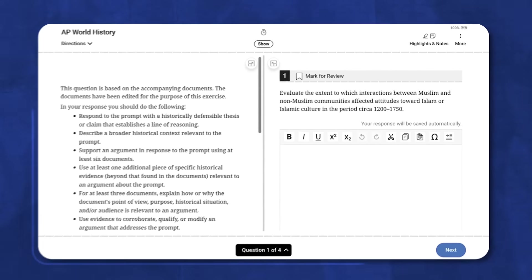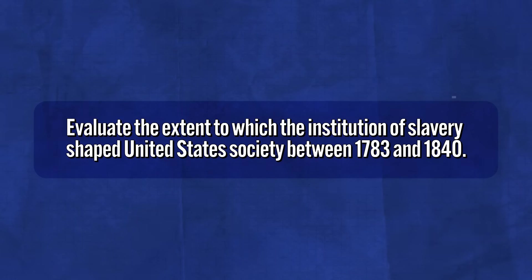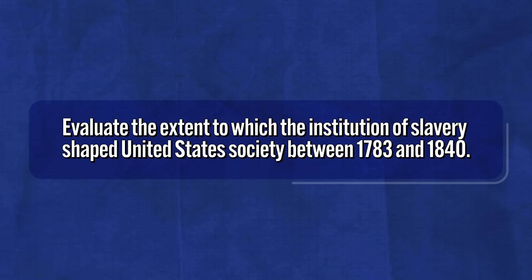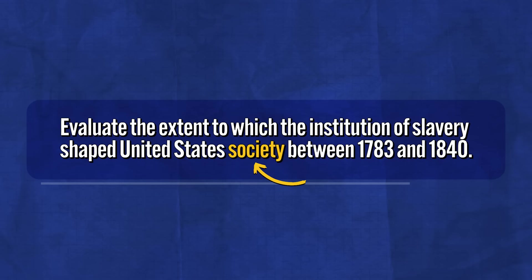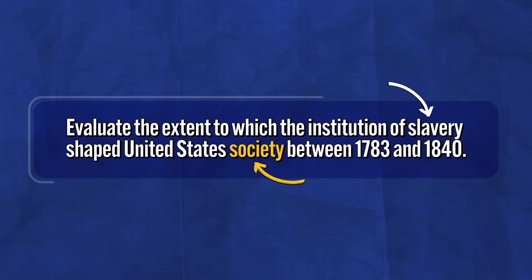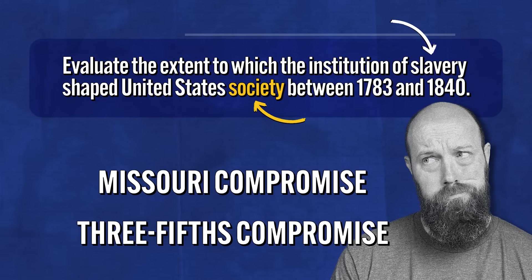If you're doing this digitally, as you will for the national exam, they will have annotation tools for you, so make sure you use them. The second thing you need to do is mark the category or categories in which they want you to write. For example, the 2024 APUSH DBQ asked you to evaluate the extent to which the institution of slavery shaped United States society between 1783 and 1840. The key word there is 'society.' Your essay needs to deal with how slavery affected society in that date range — not political causes and effects, but social effects.